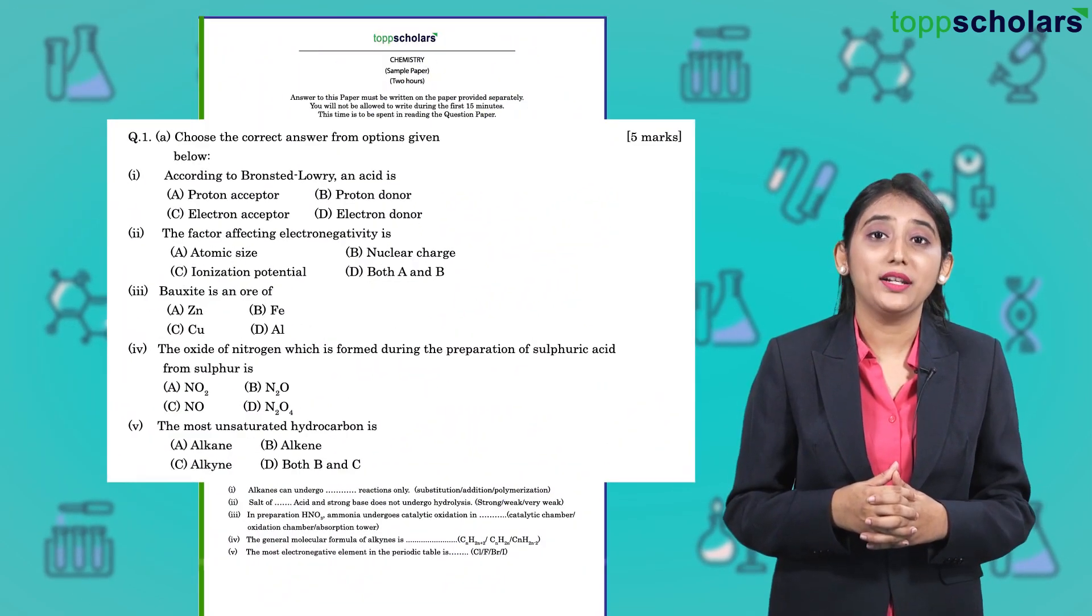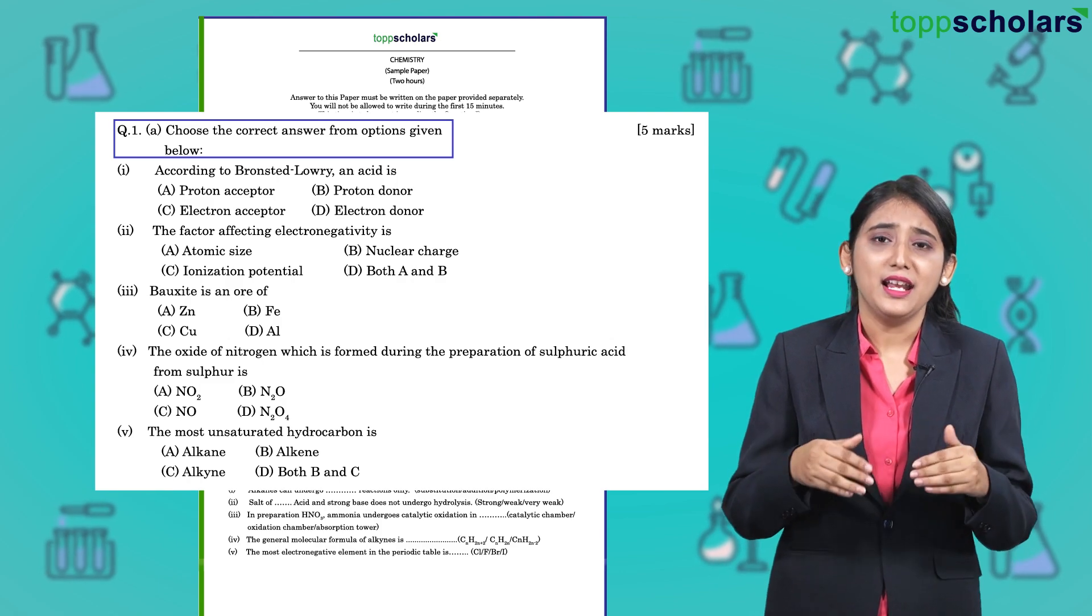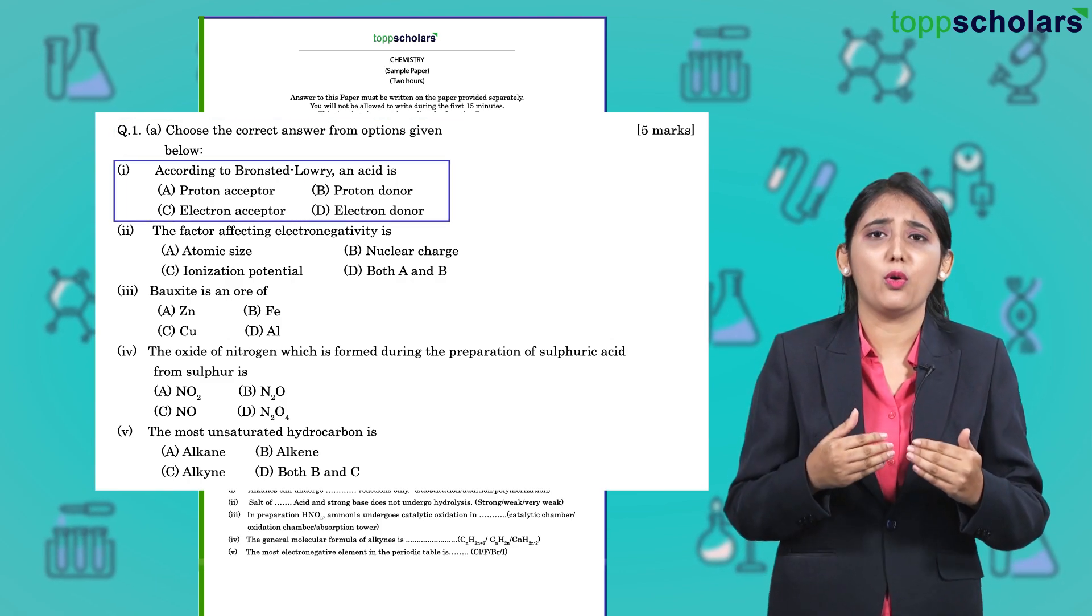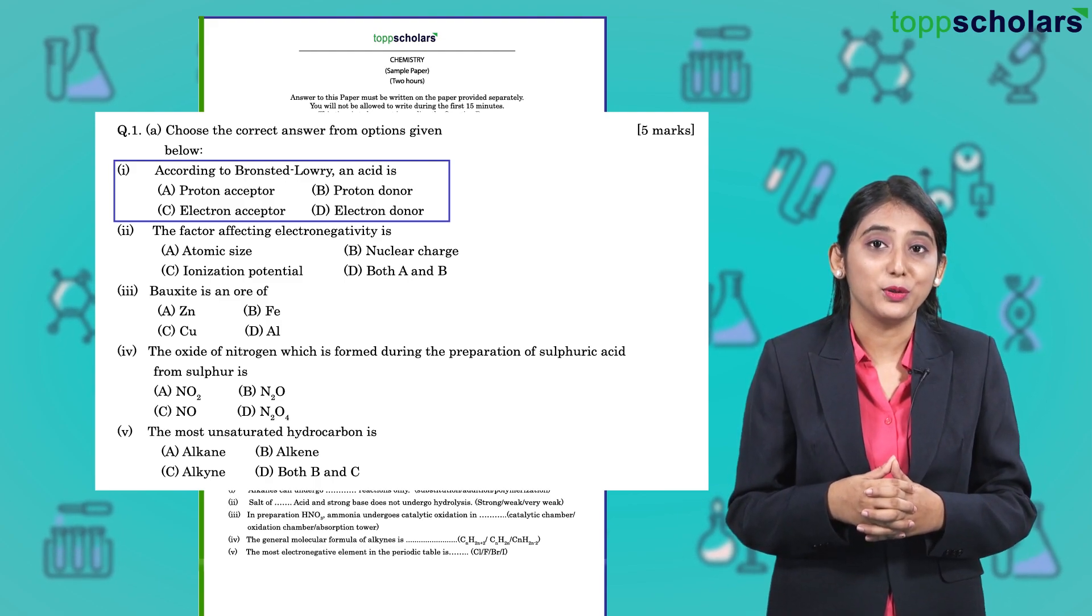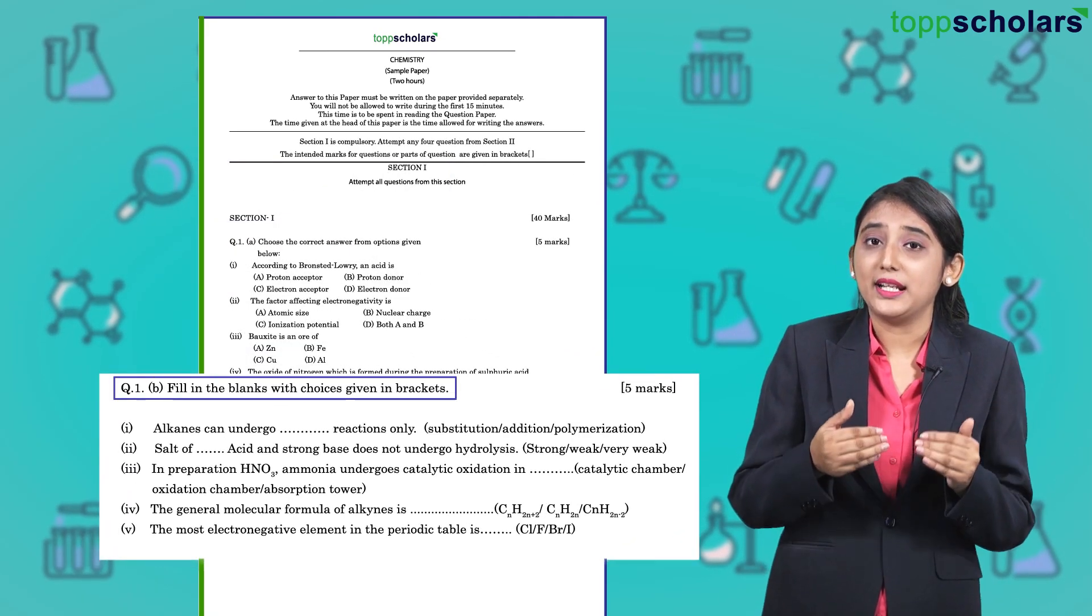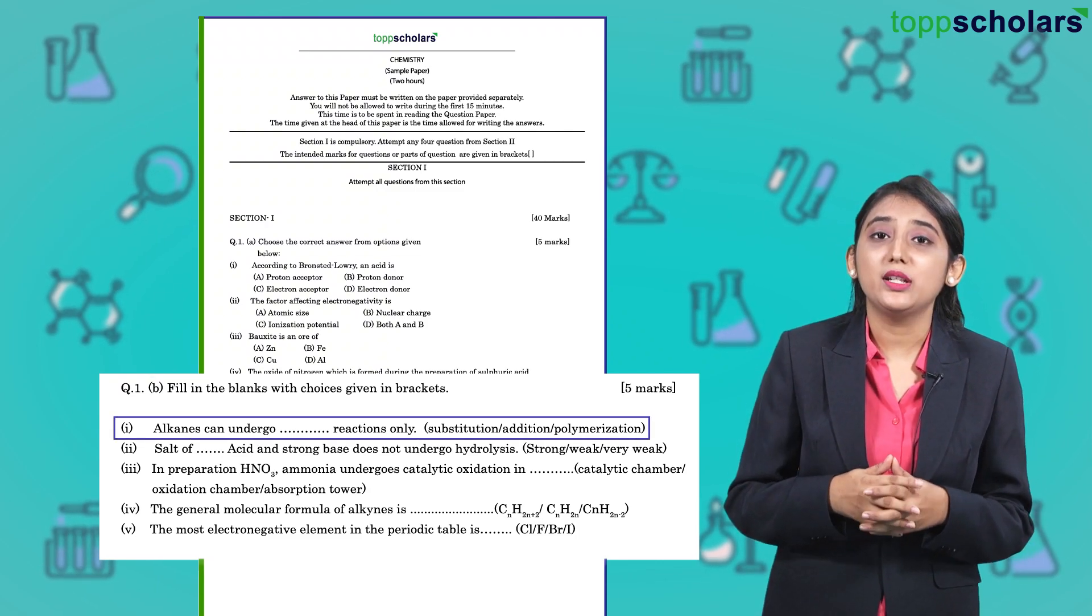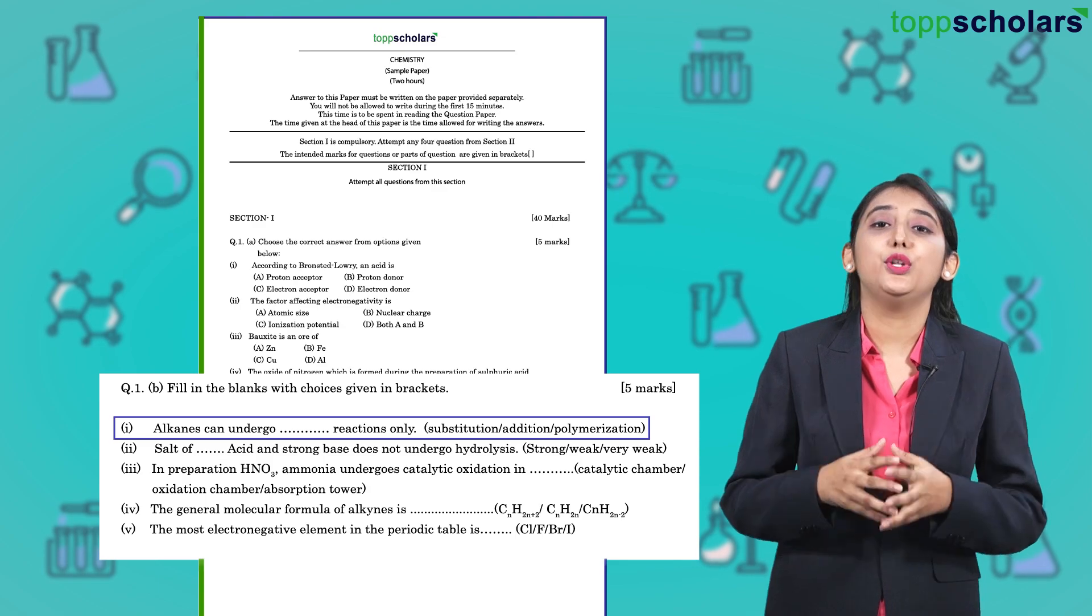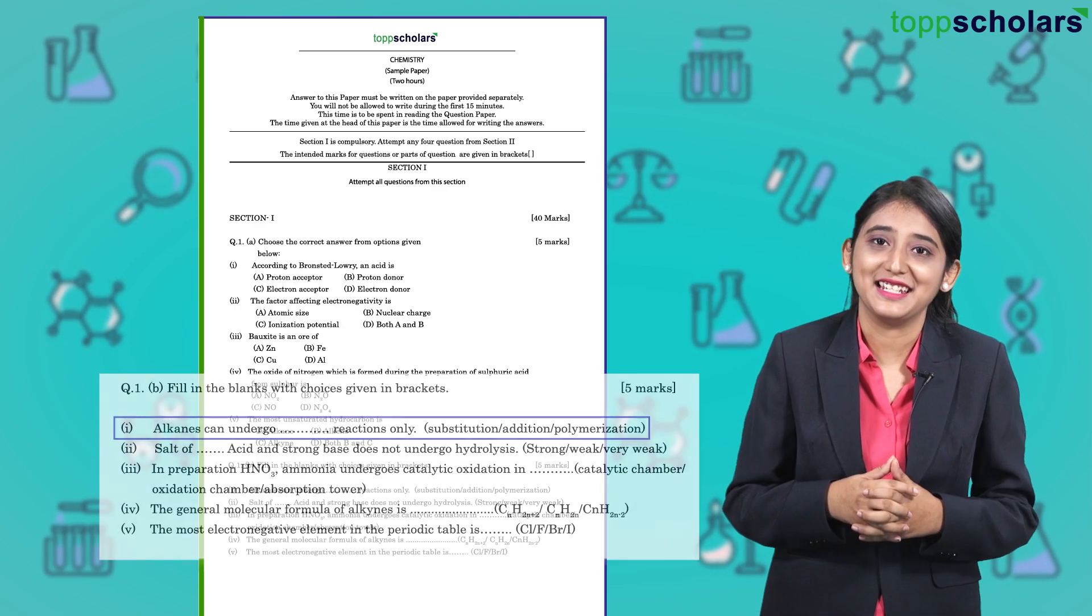Question 1 consists of MCQs, that is multiple choice questions. Here you are provided with 4 options, out of which you need to select any one correct option. Question 1B consists of fill in the blanks. In this type, you are provided with some options out of which you need to identify the correct option and complete the sentence.